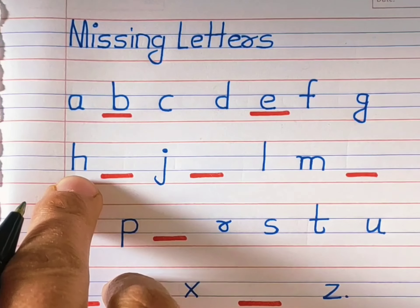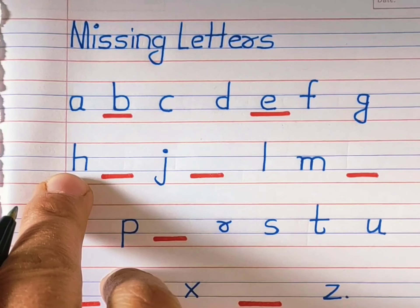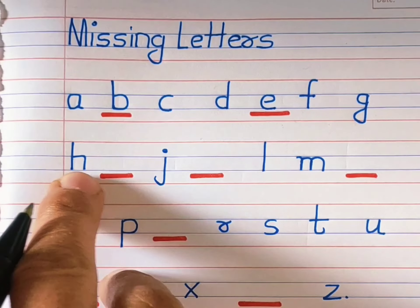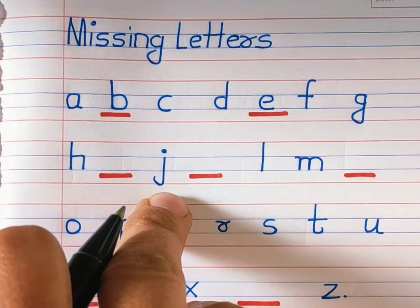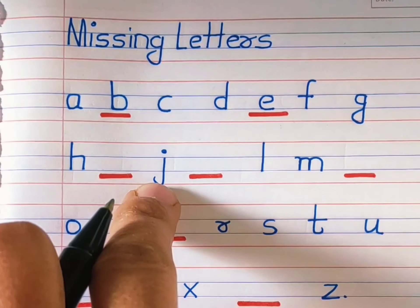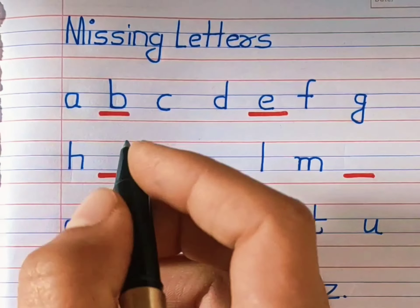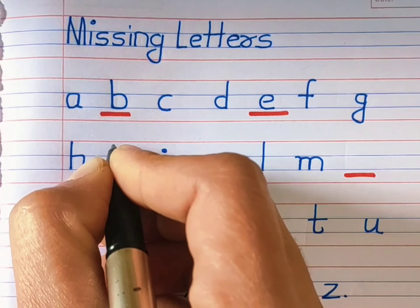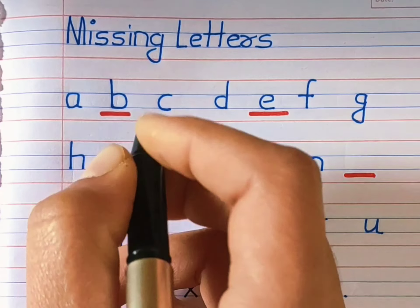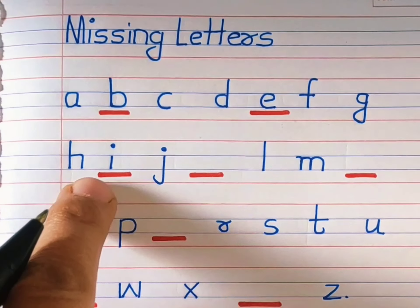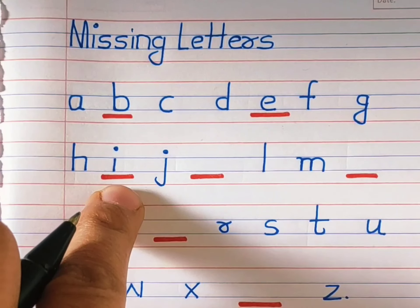Which alphabet is this? Yes. What comes after H and before J? Yes, small I. G, H, I.